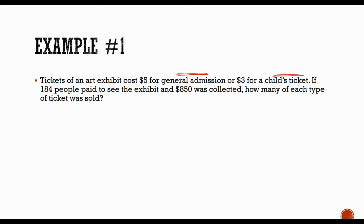You can use any variable you want. In this case, let's go with G and C for general admission and child's ticket. Sometimes picking variables like this that help you keep track of which is which will help when you're entering your answers — because if we plug them in flip-flopped, it'll get marked wrong. So we've got to keep track of how many general admission versus how many children's tickets were sold.